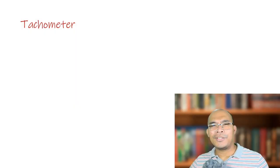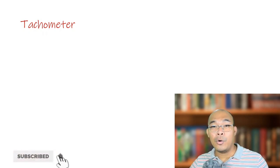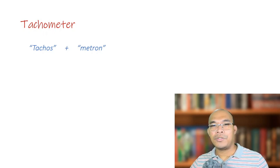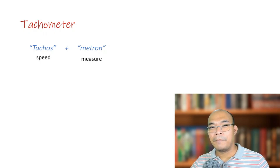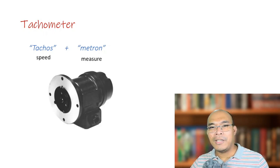Let us start our discussion with understanding the etymology or the origin of the word tachometer. This word came from two Greek words — takos and metron — which mean speed and measure. Hence, a tachometer is a device that measures speed, and in order to measure rotational speed, this device uses the principle of the tacho generator.